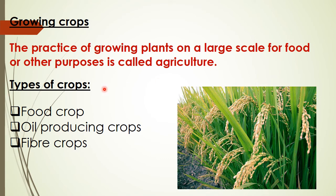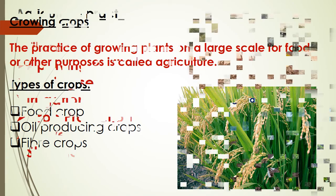Crops are mainly of three types: food crops like wheat, paddy, and maize; oil-producing crops like sunflower and mustard; and fiber crops like cotton and jute.